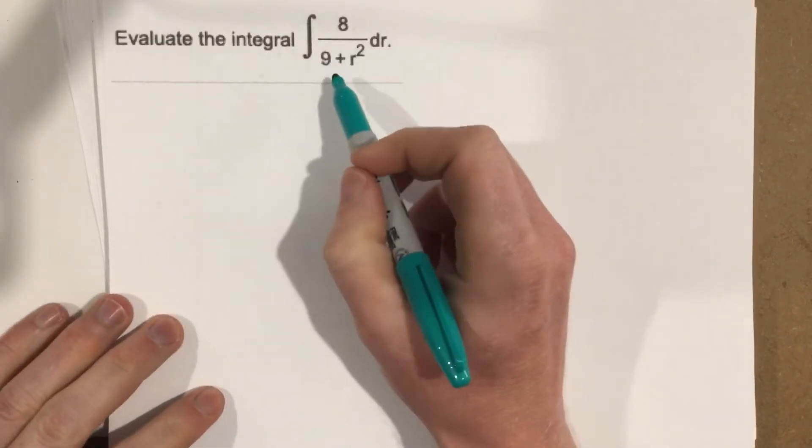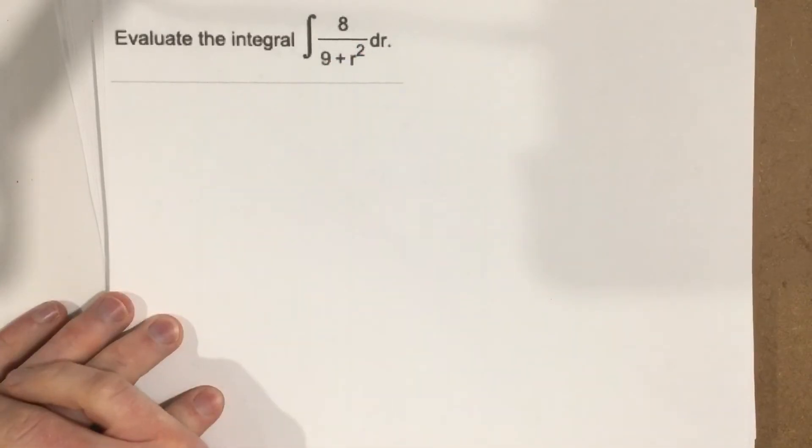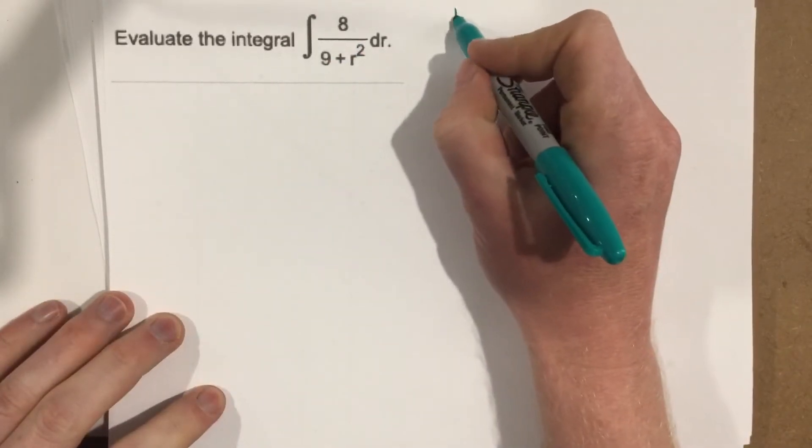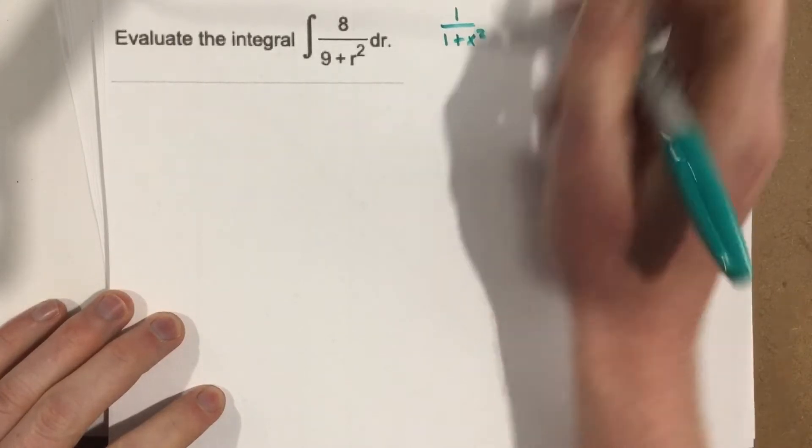Let's start out first by rewriting this in a different form, and we're really shooting for this form. We want 1 over 1 plus x squared. That's the form we want.